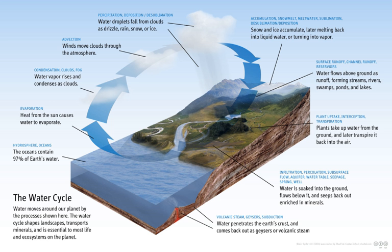Evaporation: the transformation of water from liquid to gas phases as it moves from the ground or bodies of water into the overlying atmosphere. The source of energy for evaporation is primarily solar radiation. Evaporation often implicitly includes transpiration from plants, though together they are specifically referred to as evapotranspiration. Total annual evapotranspiration amounts to approximately 505,000 cubic kilometers of water, 434,000 cubic kilometers of which evaporates from the oceans. 86% of global evaporation occurs over the ocean.